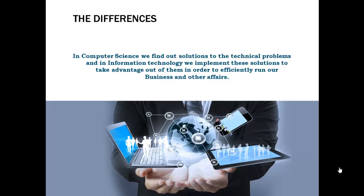Another example is computer and network systems used by teachers, trainers, and students for educational purposes, or by people in business for their business purposes. All these things come under information technology. I hope this is now clear and you are better able to understand the difference between computer science and information technology. Note that these words are often used interchangeably, however CS students and IT students must be able to differentiate between computer science and information technology.